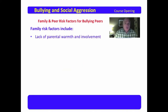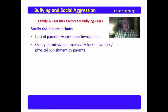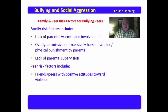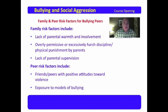Family risk factors for being a bully include lack of parental warmth and involvement. Much research shows that parents are the most important influence on a child, and if they are not warm and involved, the child is at risk for becoming a bully. Overly permissive or excessively harsh discipline and physical punishments also contribute. Lack of parental supervision is another factor. Peer risk factors include friends with positive attitudes towards violence, and exposure to models of bullying — the more you've been exposed to or victimized by bullying, the more likely you are to participate in it.